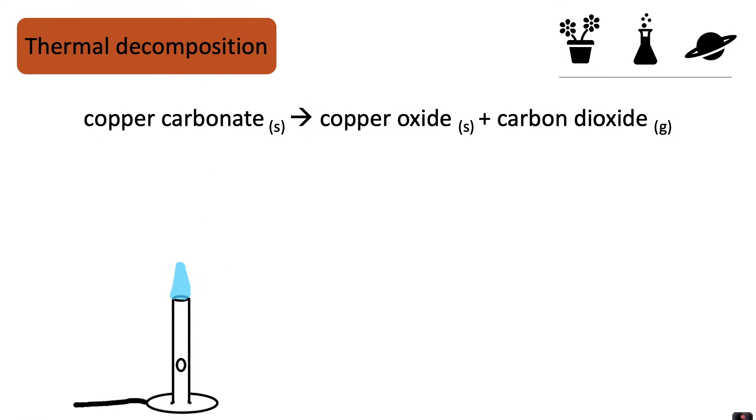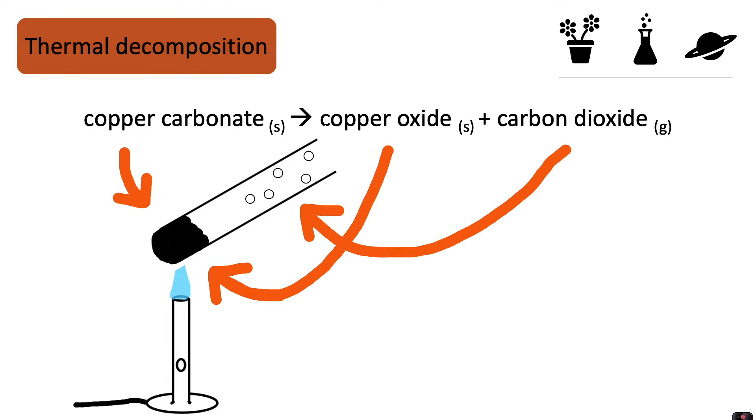If we look at a different example, here we've got copper carbonate breaking down into copper oxide plus carbon dioxide. So we start off with a solid in our boiling tube that we're heating using the Bunsen burner, and that's our copper carbonate. As we heat it, that will decompose and break down into copper oxide, which is black, and also carbon dioxide gas is given off.